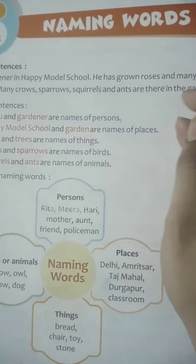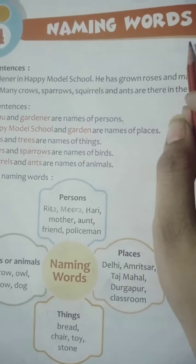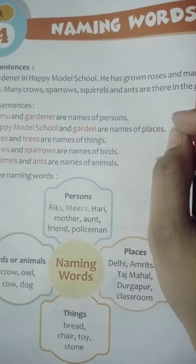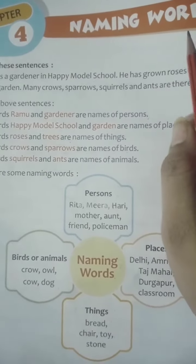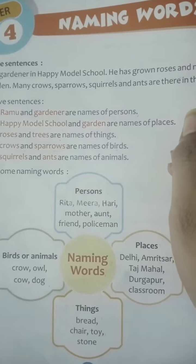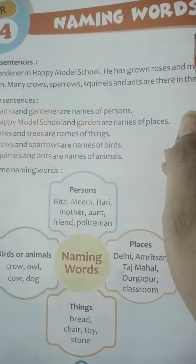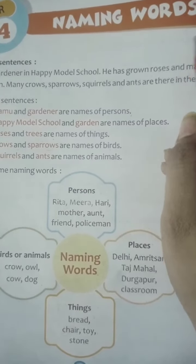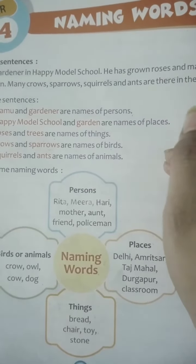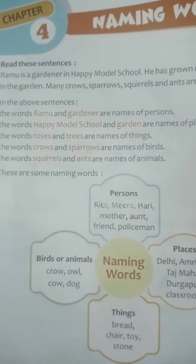What are naming words? Naming words kya hain? Humni class first mein bhi pada tha — the names of persons, animals and birds, places or things. Ke jo name hoti hain, usse naming words kehte hain.